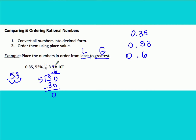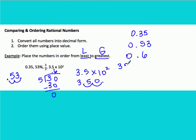Our last number is 3.5 times 10 to the second — scientific notation. We bring down 3.5, move the decimal two spaces to the right, and we get 350. Notice how I'm stacking these numbers: the decimal points are lined up, with ones, tens, and hundreds in the left columns, and tenths and hundredths to the right.